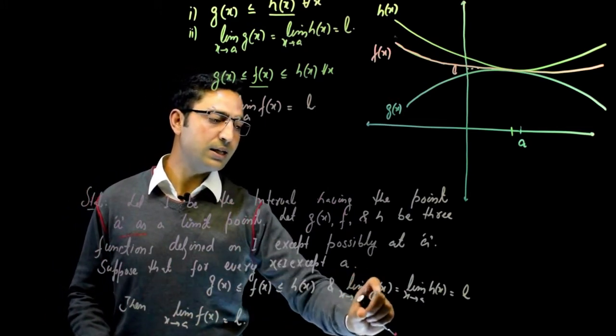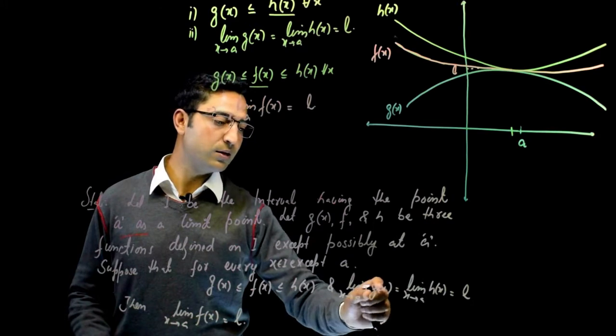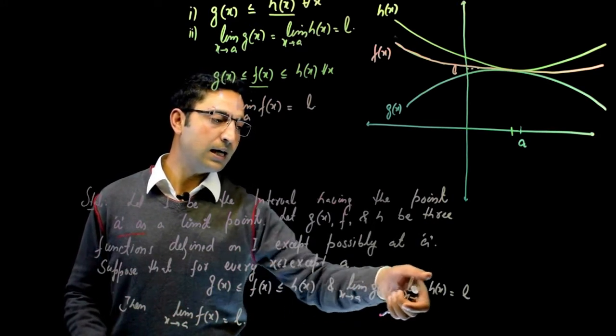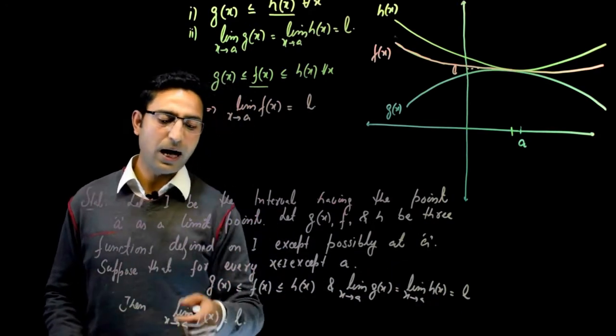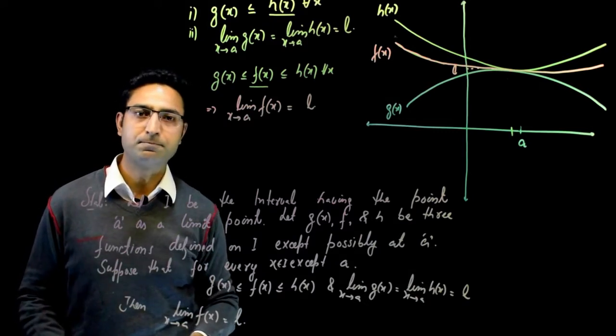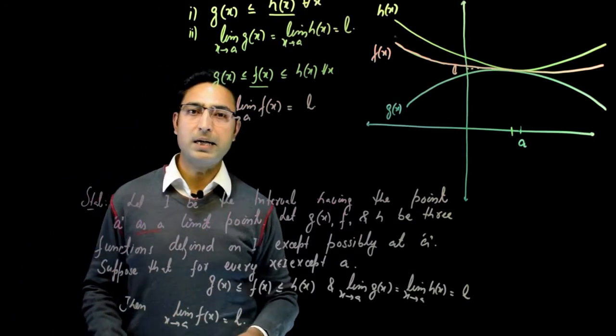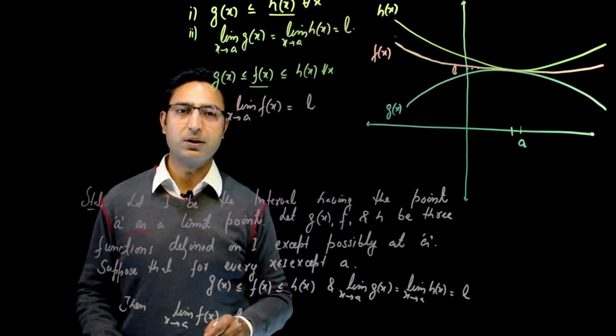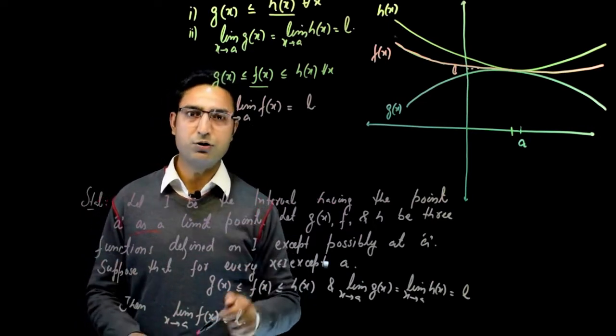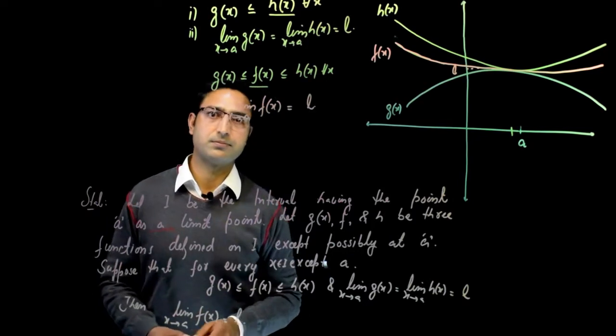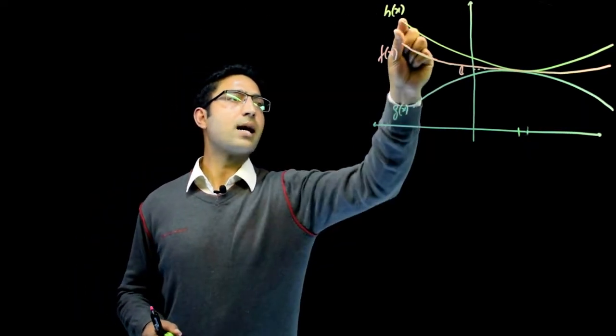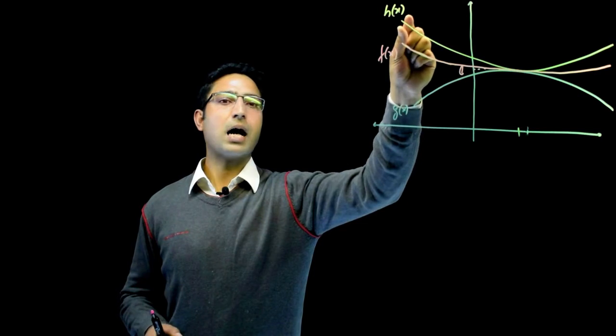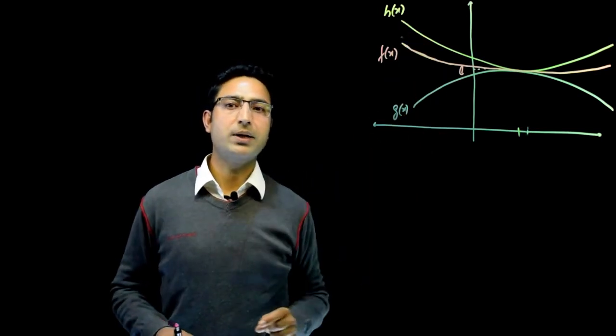This need not be defined at a but has to be defined in the neighborhood of a. Then suppose that g(x) is less than or equal to f(x) is less than or equal to h(x) for every point x belongs to I except at a. And suppose that the limit of g at a and limit of h at a is equal to L. Then limit of f at a will also be equal to L. Now, to understand it better, let me do an example with the help of Squeeze Principle.